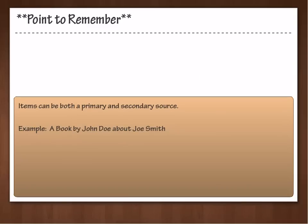Before we move on, let's take a second to discuss the relationship between some primary and secondary sources. It is important to note that some secondary sources can be used as primary sources. The important distinction is what you are researching at the time. Let's take a hypothetical book written by John Doe about the subject Joe Smith. If we were writing a research paper on Joe Smith, this book would be a secondary source. However, if we were writing a research paper on the works of John Doe, this book would be considered a primary source as it was written by the subject we are researching. This distinction is important because it allows us to see sources not for just what they are, but what they could be, all depending on our research area.